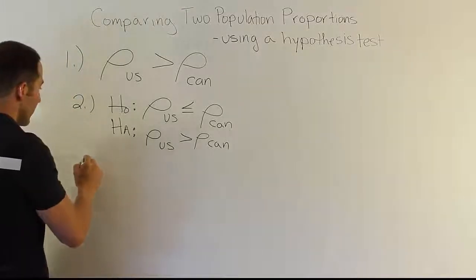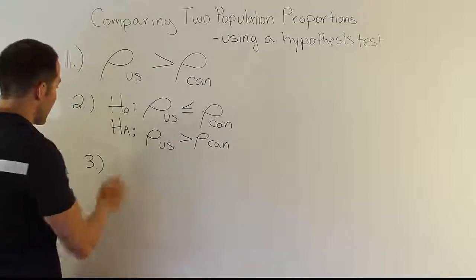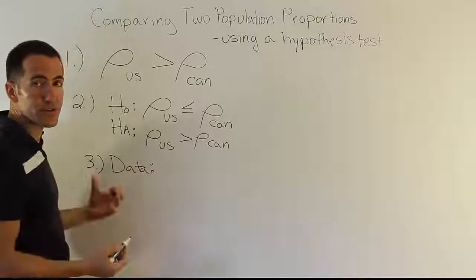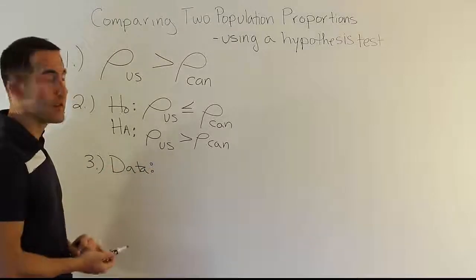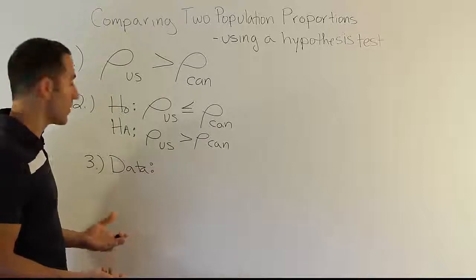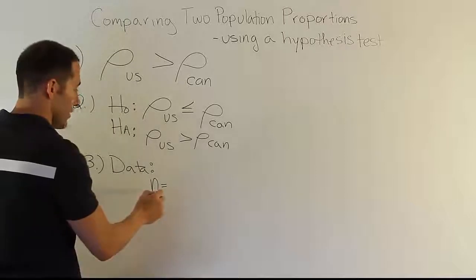Alright, then we have our step three of the problem. Our step three would be a data step. So we collect all the data. Remember, nothing really changes in terms of the overall structure. We still have to collect data to test our hypothesis. And we're going to have two sets of data. We will have, again, a sample size provided.